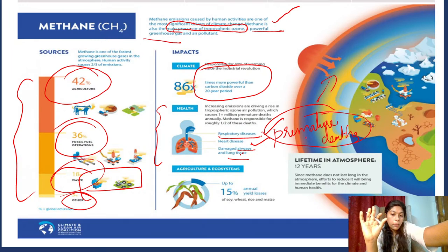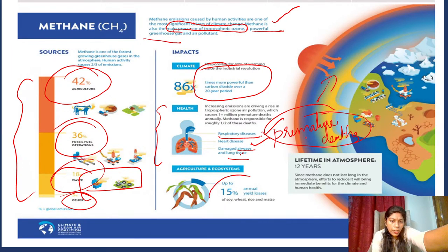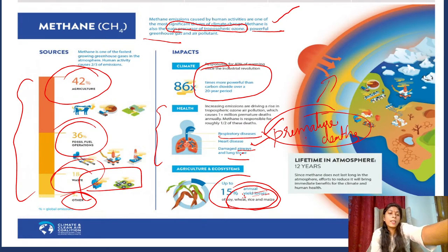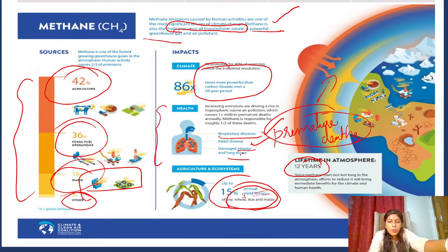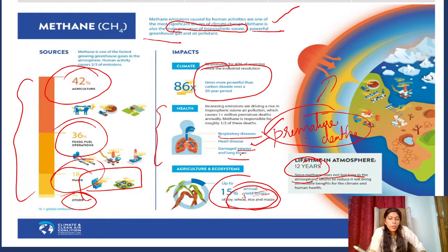Methane is also responsible for up to 15 percent of annual yield losses of staple food crops like wheat, rice, maize, and soy. So agriculture, while being the primary emitter of methane, is also harmed by methane. The atmospheric lifetime of methane is around 12 years — in this period it causes major damage across all sectors.